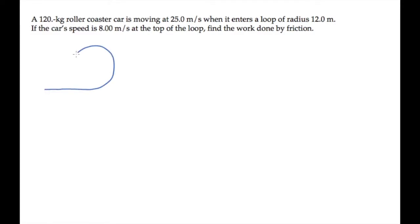The roller coaster car in this problem is moving along a circular track with a radius r of 12 meters. We're told it's moving at 25 meters per second at the bottom and 8 meters per second at the top. We can label those values using b for bottom as the subscript and t for top.